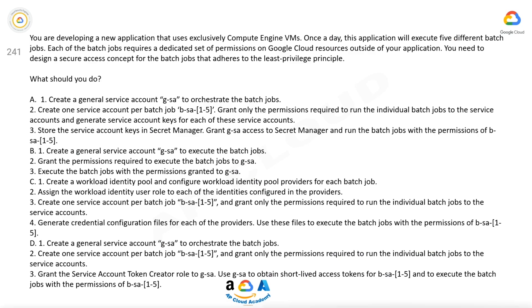Question number 241. You are developing a new application that uses exclusively Compute Engine VMs. Once a day, this application will execute five different batch jobs. Each of the batch jobs requires a dedicated set of permissions on Google Cloud resources outside of your application. You need to design a secure access concept for the batch jobs that adheres to the least-privileged principle. What should you do?